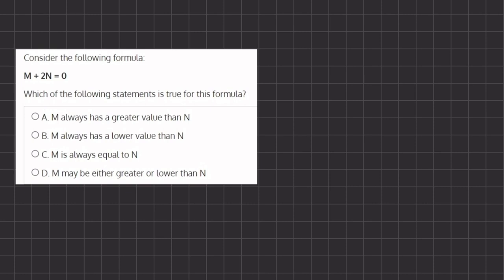Now as we can tell in our answers, they are asking whether m is greater, lower, or equal to n. So if we take a look at our formula again, we can also say that m equals negative 2n.